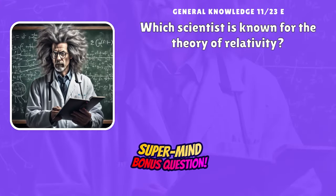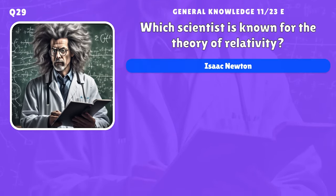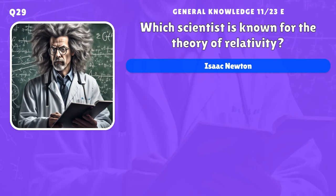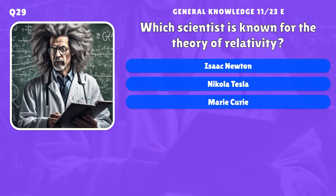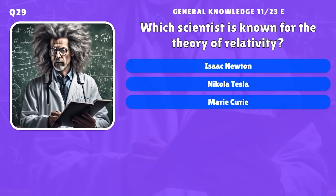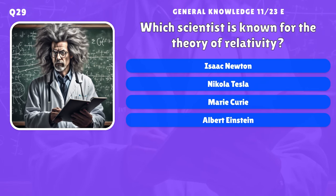Which scientist is known for the theory of relativity? A) Isaac Newton, B) Nikola Tesla, C) Marie Curie, D) Albert Einstein.